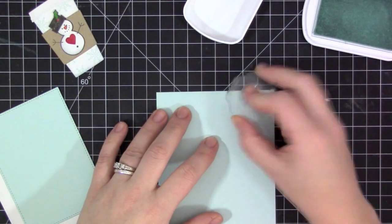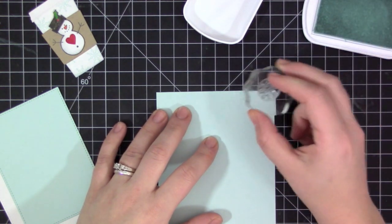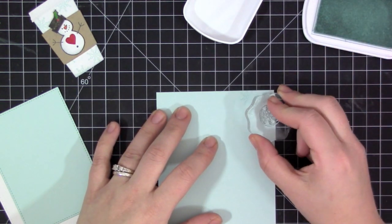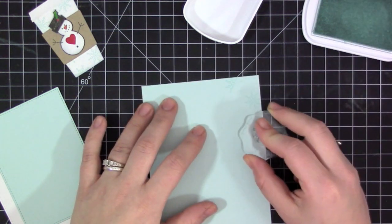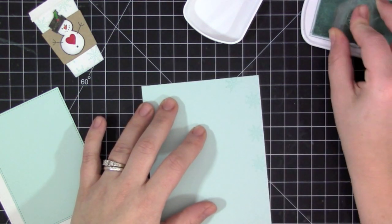Before I went ahead and adhered those on, I wanted to put some of the snowflakes onto the outside area of the card base, which is the same snowflake I used on the cup. I just wanted to give a little bit more detail to the plain card stock in the background area.